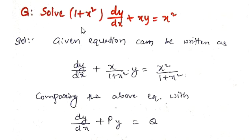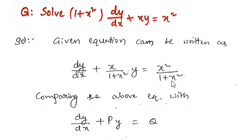Solve (1 + x²) dy/dx + (x + y) = x². The given equation can be written as dy/dx + (x / (1 + x²))·y = x² / (1 + x²), if you divide the total equation with (1 + x²).